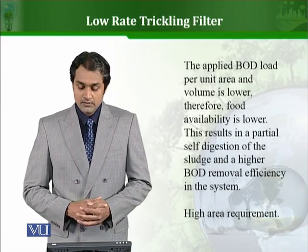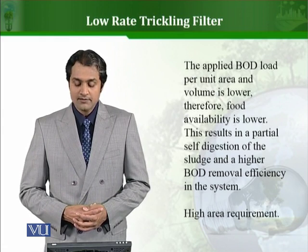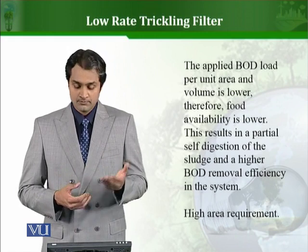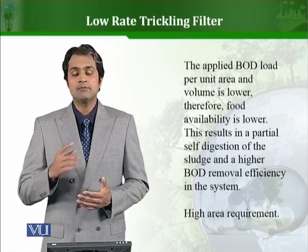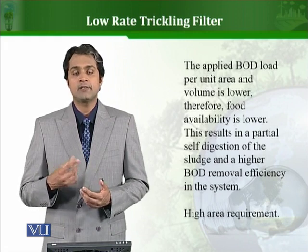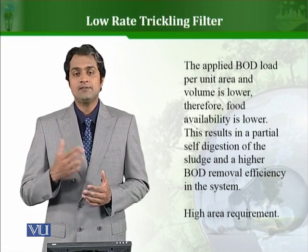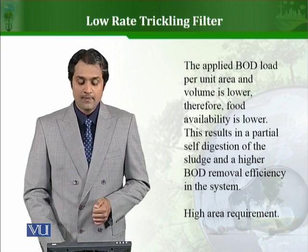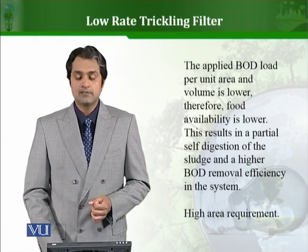The applied BOD load per unit area is lower — that is why it is called a low rate trickling filter. This results in partial self-digestion of the sludge. When the BOD rate is low, the organic content is less, so food for the biofilm is less. Bacteria start to die and the remaining bacteria utilize the dead cells, so the biomass stabilizes itself, increasing system efficiency. However, these systems require a much larger area to be installed.